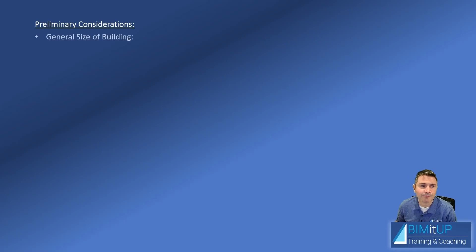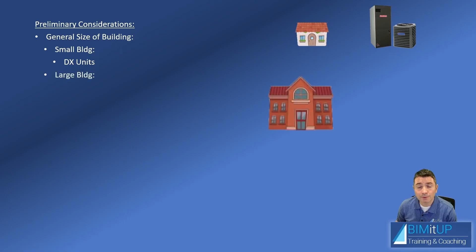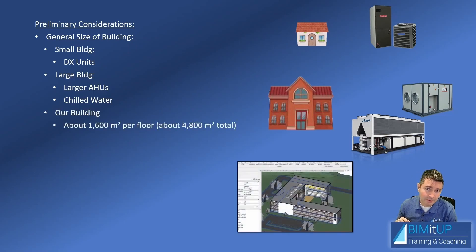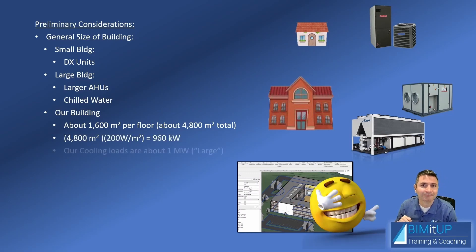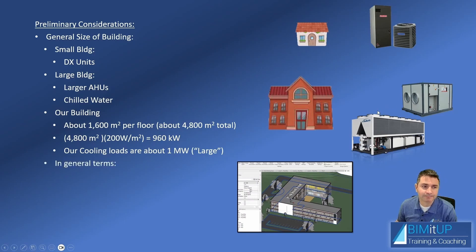Let's also discuss some preliminary considerations regarding general building size. If you have a small building, you can probably get by with a small DX unit — a small evaporator inside and a condensing unit outside. As you move into larger buildings, you may want to think about larger air handling units typically fed by chilled water, which can be air-cooled or water-cooled chillers. Our building is about 1,600 square meters per floor, which yields about one megawatt of cooling — that's on the large side — so most likely we'll go with some rooftop units fed by an air-cooled chiller.